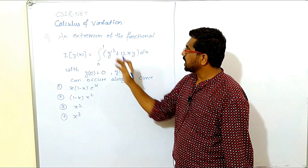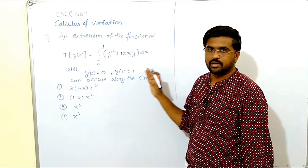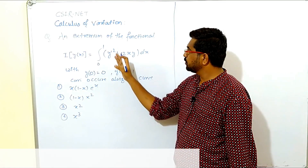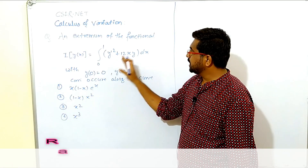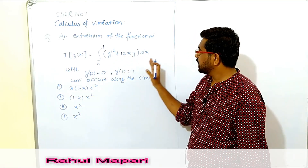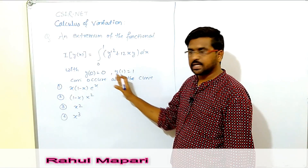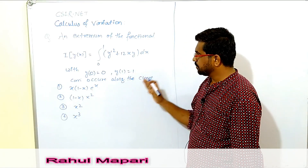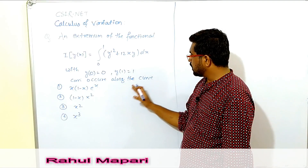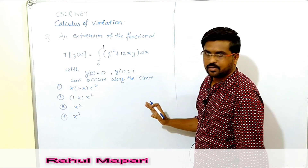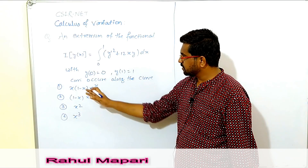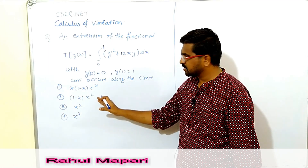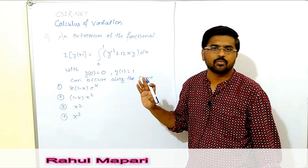Our question is: an extremum of the functional I[y(x)] equals the integral from 0 to 1 of (y' squared plus 12xy) dx, with the conditions y(0) = 0 and y(1) = 1, can occur along the curve. The options are: x(1-x)e^x, (1-x)x², x², x³.